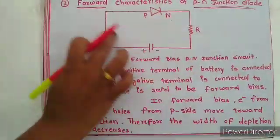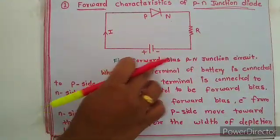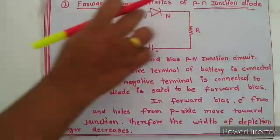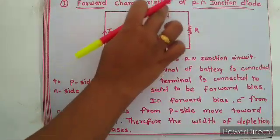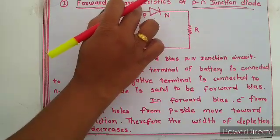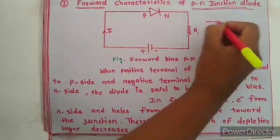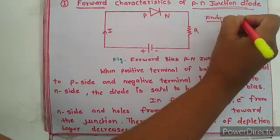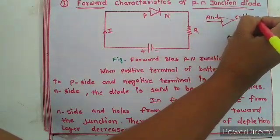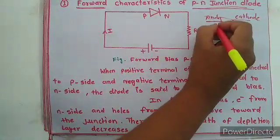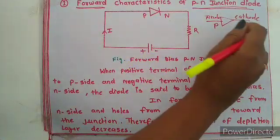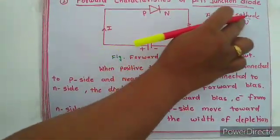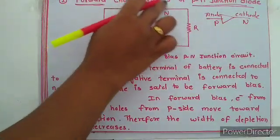This is the circuit diagram for forward bias in a PN junction diode. This is the diode — yesterday I told you the symbol of the diode. This is the anode and this is the cathode. This is the P side (positive) and this is the N side (negative), the P terminal and the N terminal. This is the bias — this is the positive terminal and this is the negative terminal.